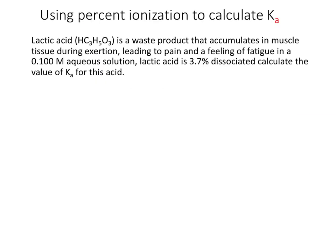Now let's look at a slightly different problem: calculating Ka from percent ionization. They've provided us with the percent ionization and the concentration of the acid. They've told us the name of the acid — lactic acid — which is not one of the memorized strong acids, so we can infer that it's a weak acid.